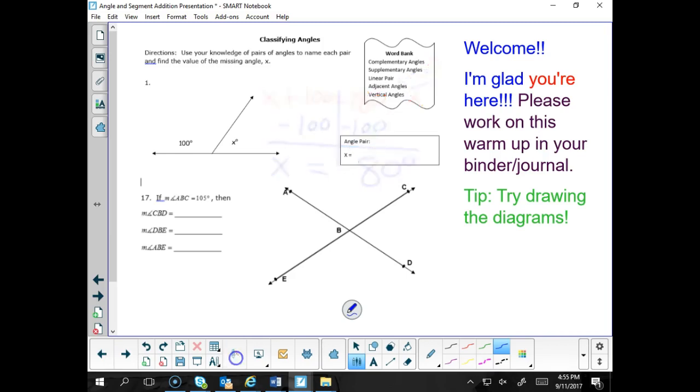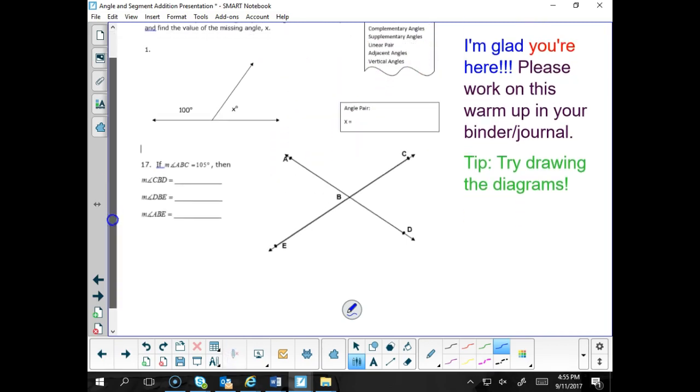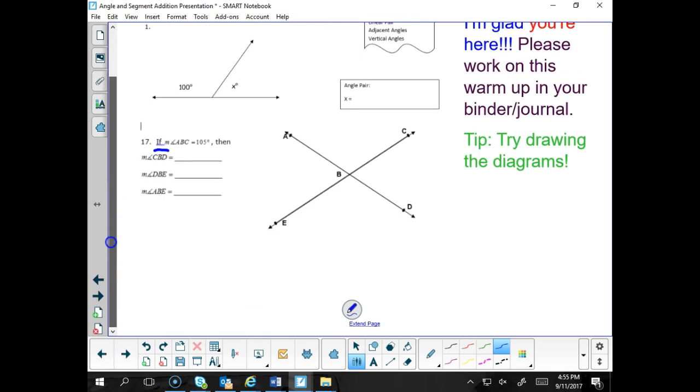Let's take a look at the second one. It says if the measure—that's what m angle means here—if the measure of angle ABC, well here's A, here's B, here's C, well we must be talking about this angle right here. If the measure of ABC is 105 degrees, then find the measure of these several angles.